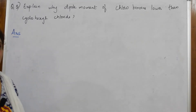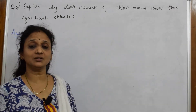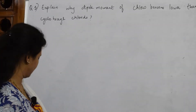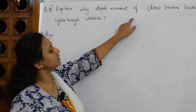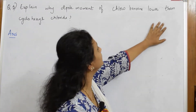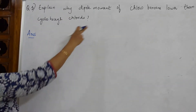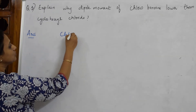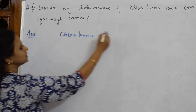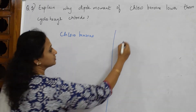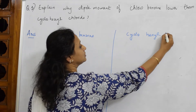In my previous video we discussed a question based on dipole moment. This is one more question based on dipole moment. Let us discuss: explain why the dipole moment of chlorobenzene is lower than that of cyclohexyl chloride. Let us first write the two compounds — chlorobenzene and cyclohexyl chloride.